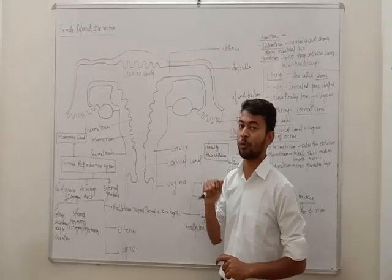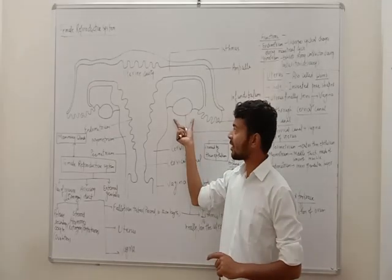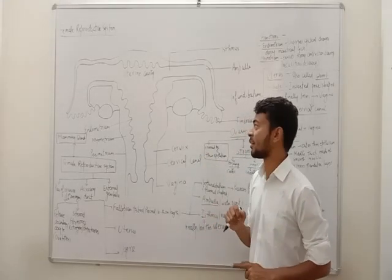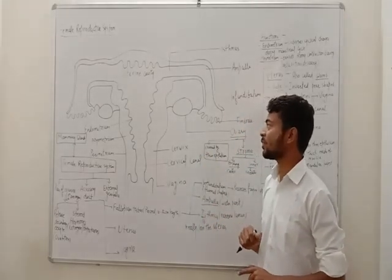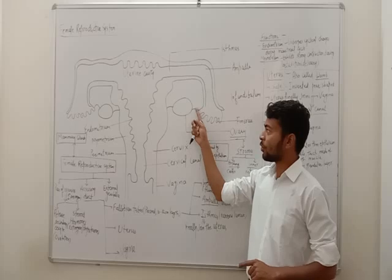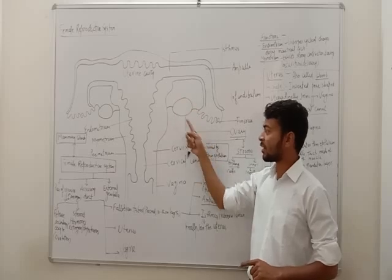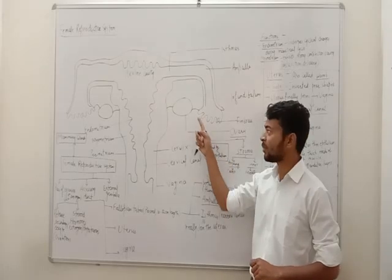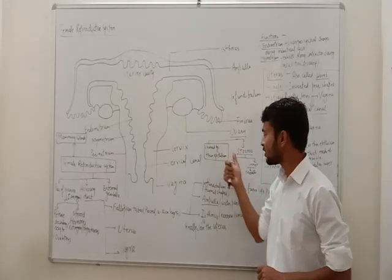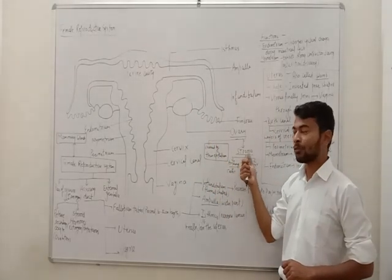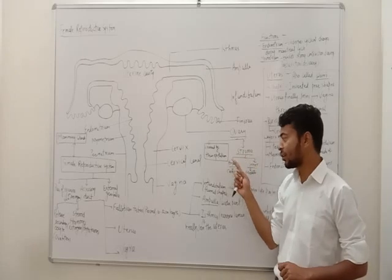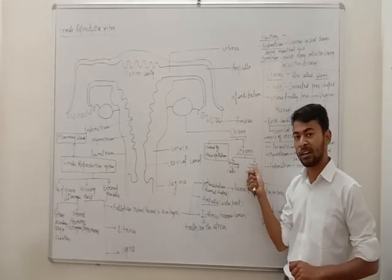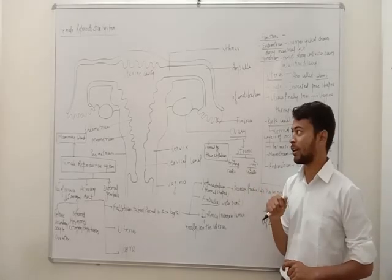The ovaries are located in the lower abdomen part of the female body. Ovaries are covered by an outer layer which is made up of thin epithelium, called germinal epithelium. The inner part is known as stroma, which is divided into an outer peripheral region known as cortex and an inner part which is known as medulla.